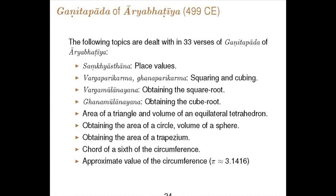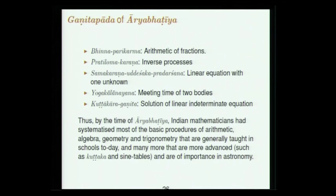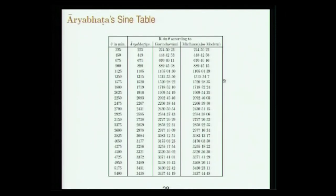By the time of the Aryabhatiya in 500 CE, there is a systematic method of calculation — parikarma — covering square, square root, cube, cube root, areas of triangles, circles, and trapezia, approximate value of pi, computing sine tables, problems with intercepted arcs in a circle, and the kuttakara method — perhaps Aryabhata's own invention — for solving linear indeterminate equations. Aryabhata's sine table was later systematically improved, with contributions by Govinda Swami in the 9th century and further improvements by Madhava.